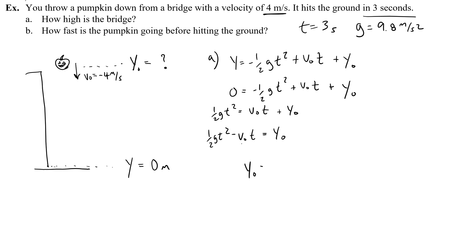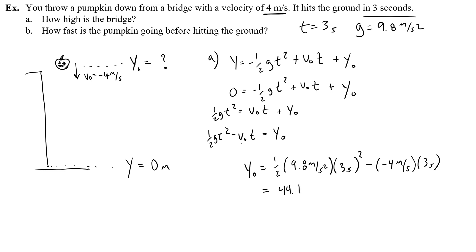So that's how I solve for the initial height, then I plug all the information in: one-half of 9.8 meters per second squared times (3 seconds)², minus a negative 4 meters per second times 3 seconds. This first term is going to give me 44.1 meters, and the second term is going to be a positive 12.